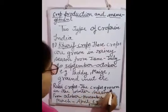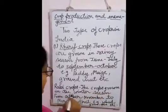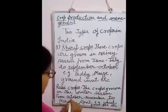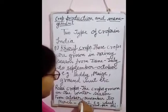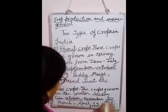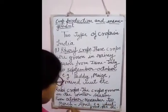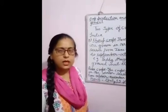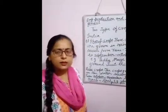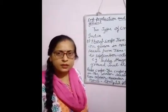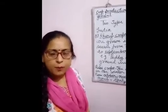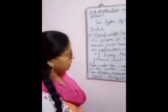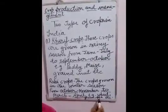Second, Rabi crops are grown in the winter season from October–November to March–April. This is also called the winter crop. Examples of these crops are wheat, gram, pea, etc.